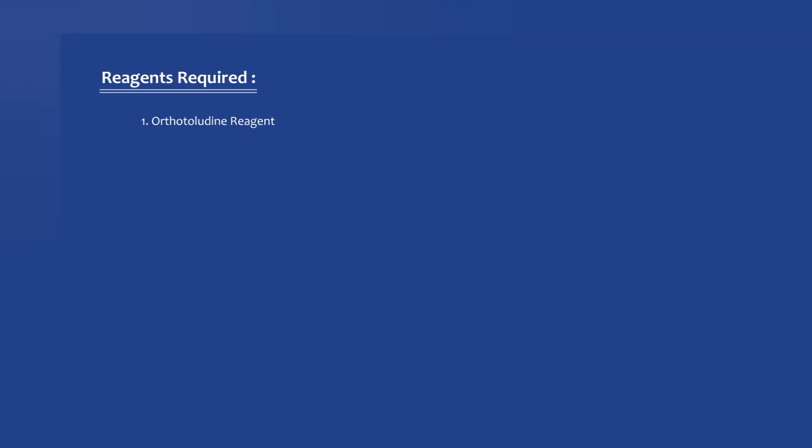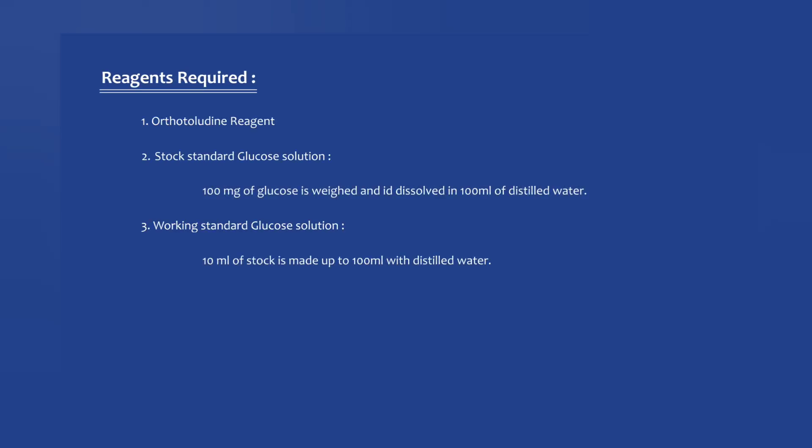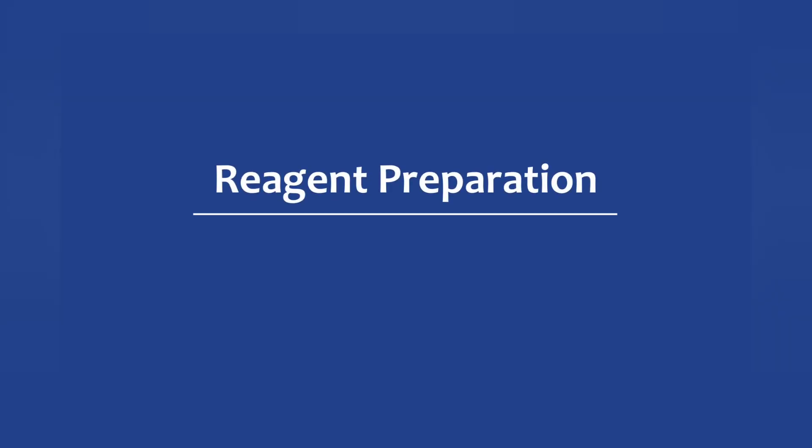The reagents required are orthotolidin reagent, stock standard glucose solution, and working standard glucose solution. The stock standard is 100 mg of glucose in 100 ml of distilled water. This is how the stock reagent is prepared for this method.